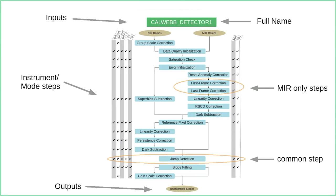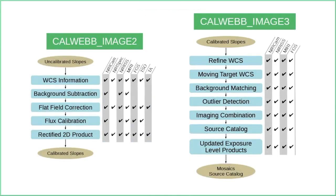The output of detector one is uncalibrated slopes — DNs per second per pixel. The next stage, image two, is straightforward: you add pointing information, do background subtraction, flat field, and flux calibration, still working on individual exposures. Image three is when you work on a group or ensemble of exposures — doing mosaicing, refining offsets between images, and producing a source catalog.